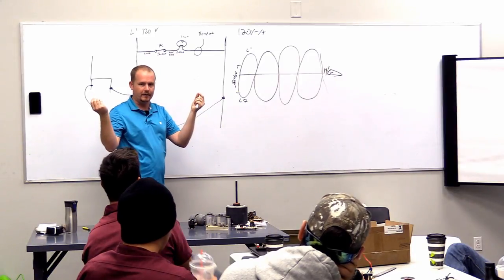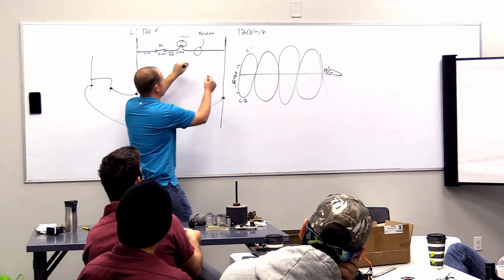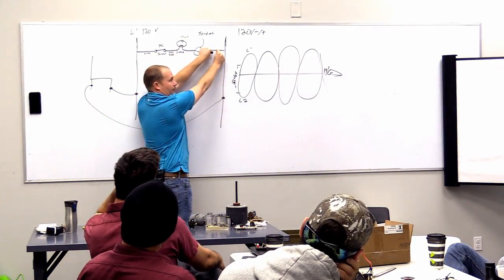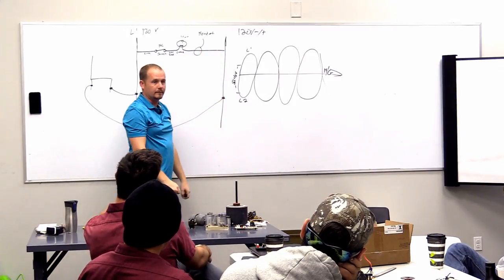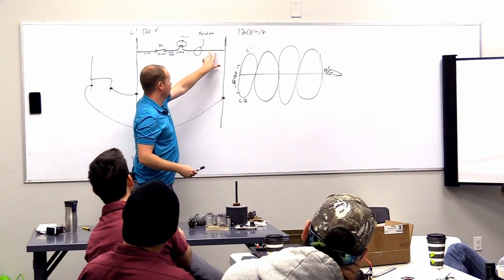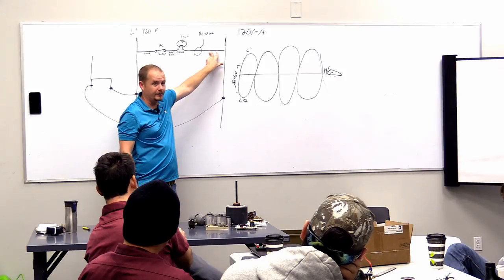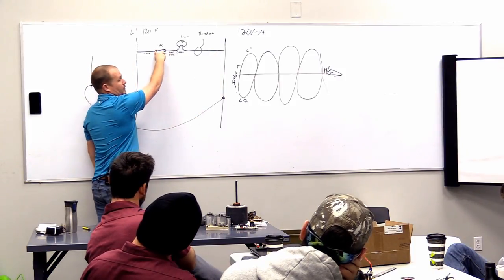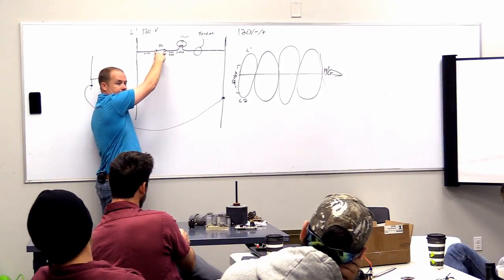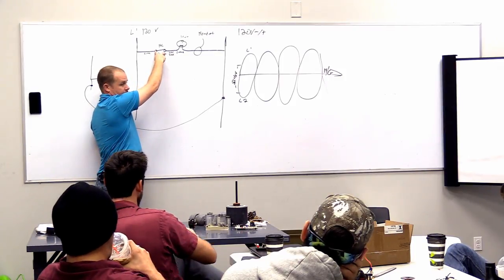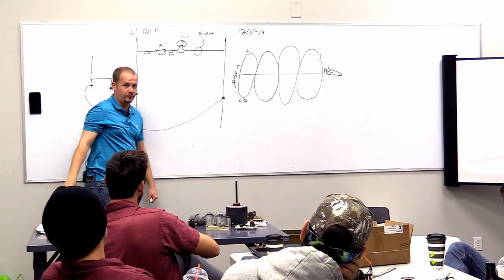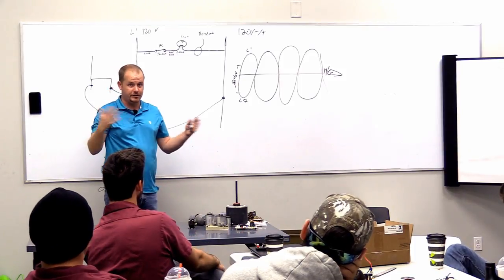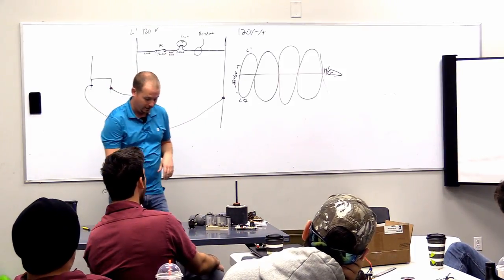If I take a voltmeter and I read between these two points, what am I going to read? I'm going to read zero because these two points are connected directly to each other. If I read across a closed switch, what am I going to read? I'm going to read zero because the switch is closed. The switch doesn't do any work, the switch is just making a circuit. It's just like reading across a wire.